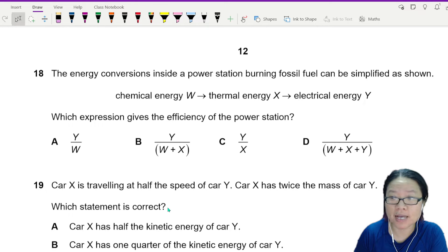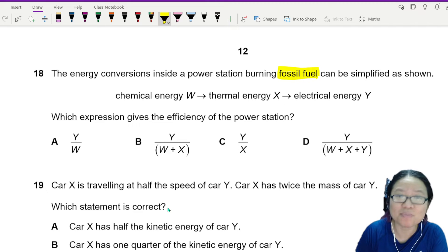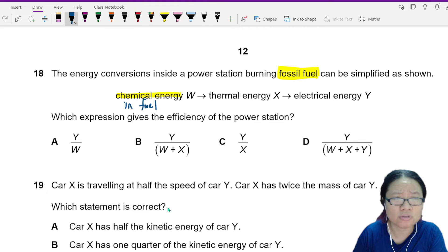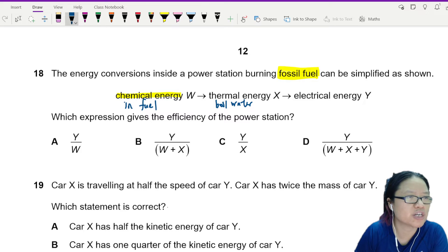The energy conversions inside a power station burning fossil fuels can be simplified as below. We have chemical energy - where's the chemical energy? In the fuel. I don't know whether it's dinosaur or petrol. It's chemical energy converted to thermal energy, this one is when you use it to boil water, which eventually becomes electrical energy because you turn the dynamo.